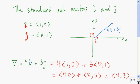In general, if you have a vector a times i plus b times j, it's just going to go a units in the x-direction and b units in the y-direction.